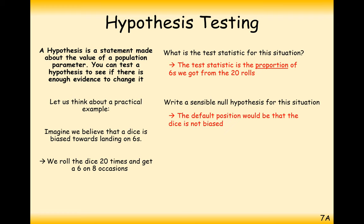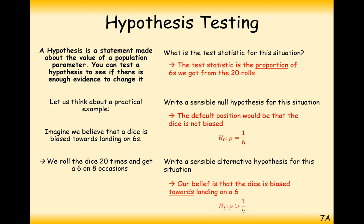Our null hypothesis will be that the dice is not biased or it's a fair dice. And our alternative hypothesis is that the dice is biased towards rolling a 6. So therefore the probability is more than 1 sixth.